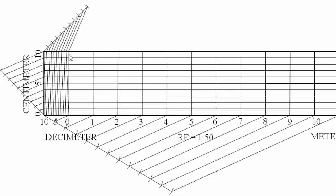This portion represents 10 centimeters, this one 9 centimeters, then 8, 7, 6, and 5 — that's why I've written 5 — then 4, 3, 2, 1, and 0. So we have three different units on the diagonal scale, and it can precisely read up to 1 meter, 1 decimeter, and 1 centimeter.